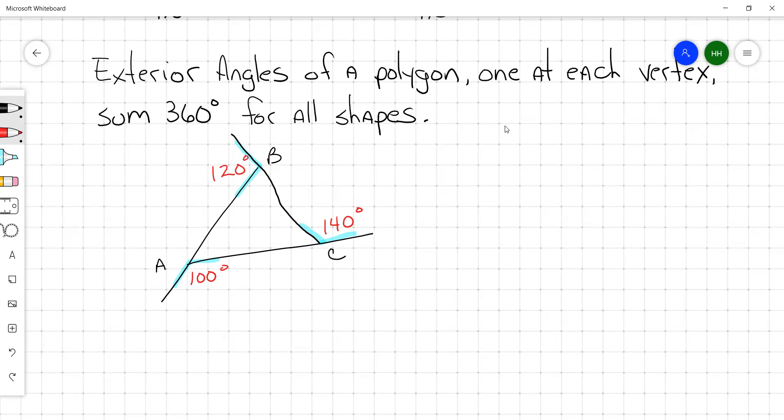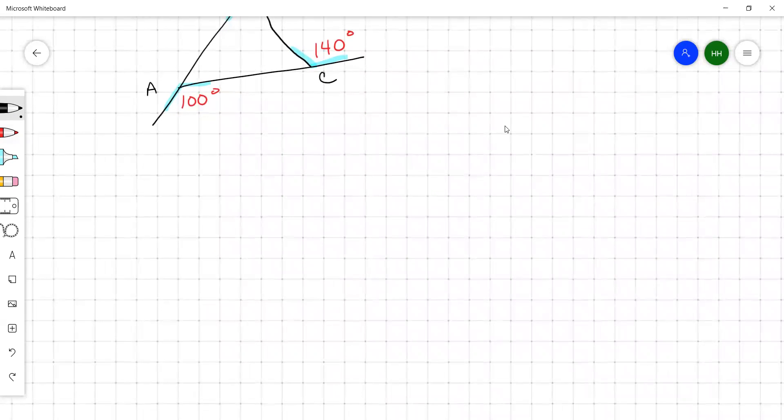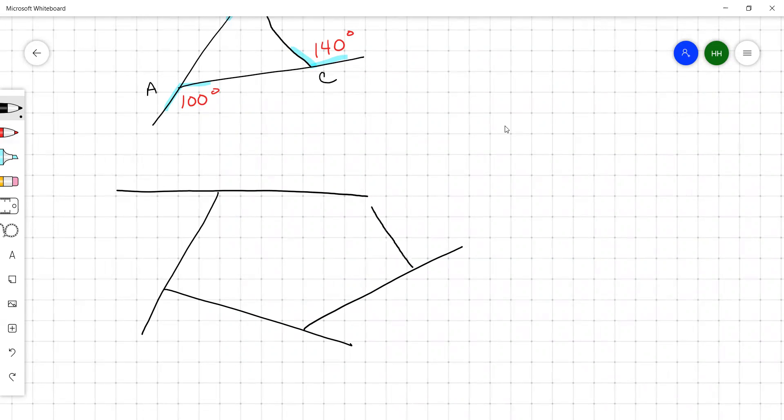So those are the type of problems you're going to get today. You may get a five-sided shape.